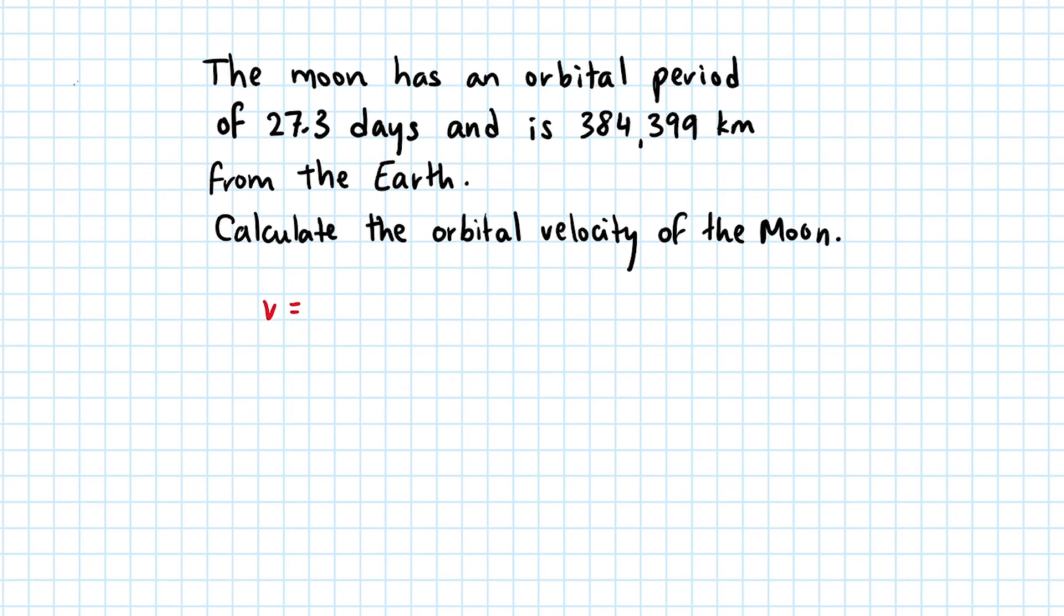Let's write down the equation. Orbital velocity is 2πr divided by time period. Substituting some numbers in, that gives us 8.85 × 10⁴. The unit will be kilometers per day, because distance here is given in kilometers and time in days.